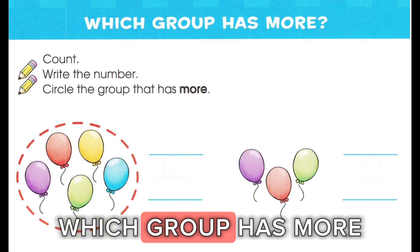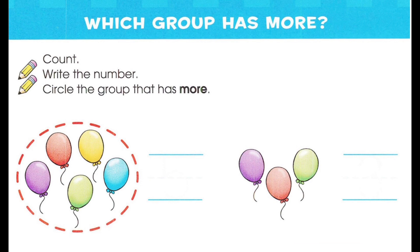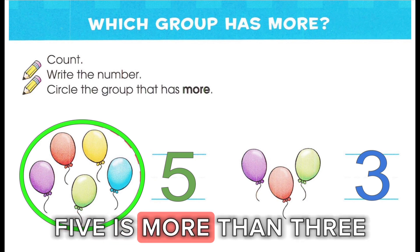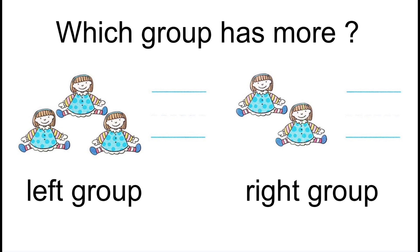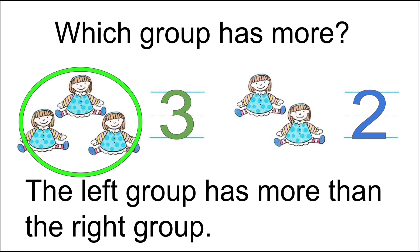Which group has more? Five is more than three. Which group has more — the left group or the right group? That's right. The left group has more than the right group. Three is more than two.